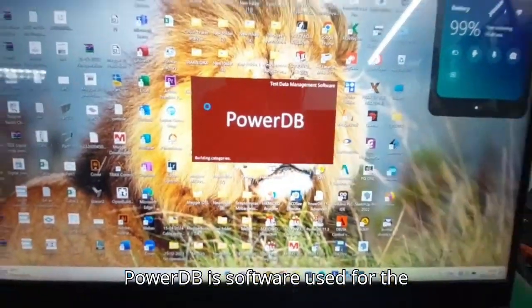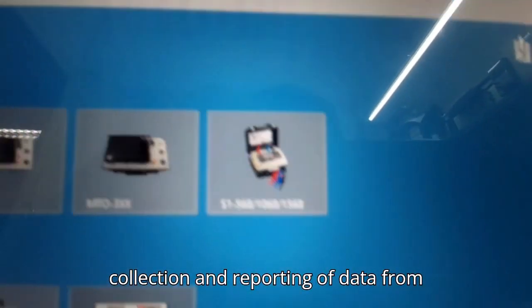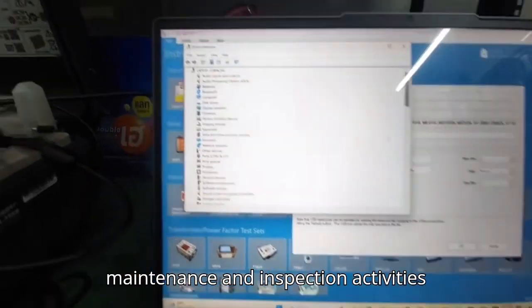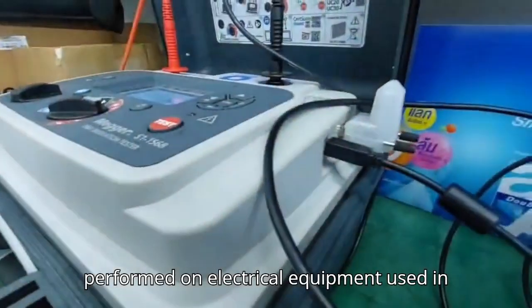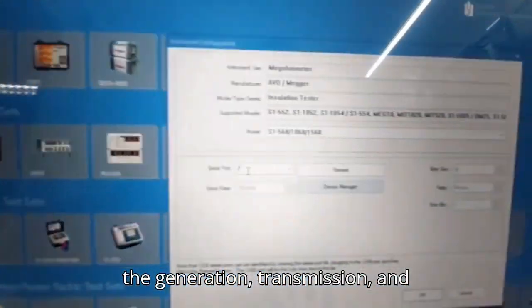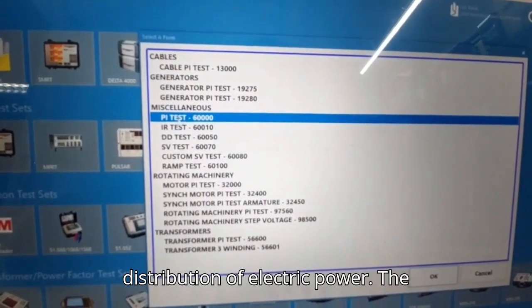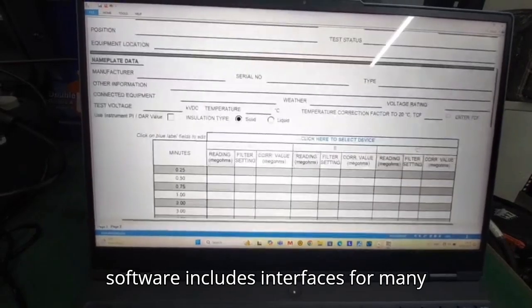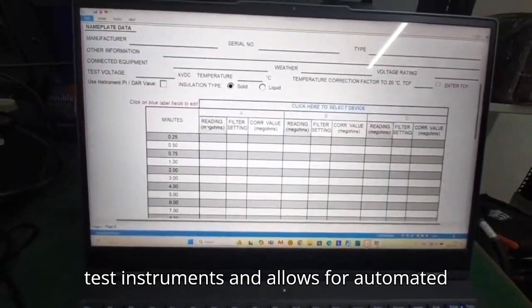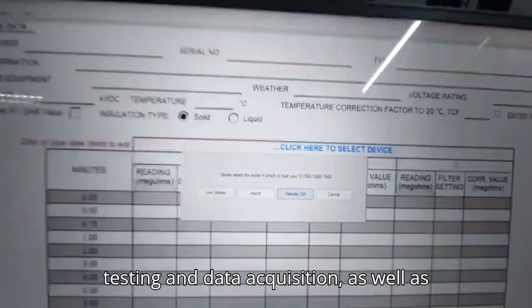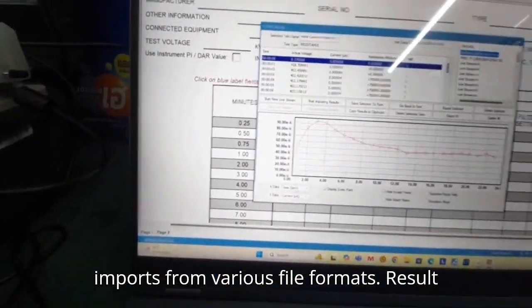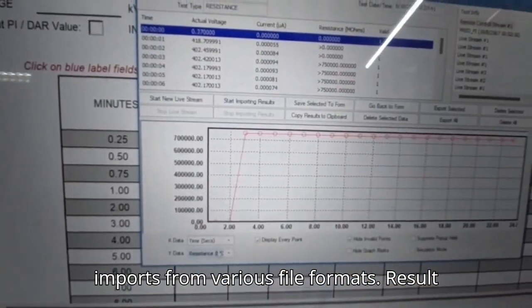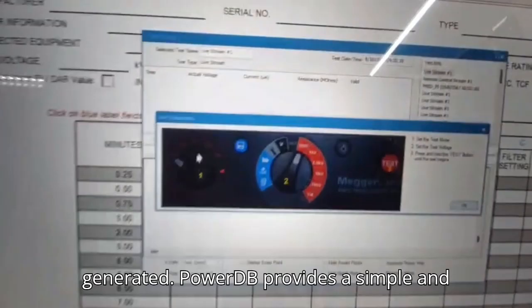PowerDB is software used for the collection and reporting of data from maintenance and inspection activities performed on electrical equipment used in the generation, transmission and distribution of electric power. The software includes interfaces for many test instruments and allows for automated testing and data acquisition as well as imports from various file formats. Result and summary reports can be easily generated.